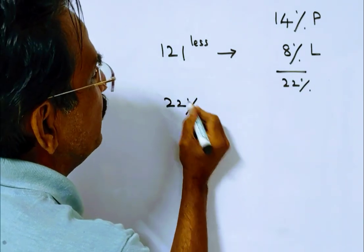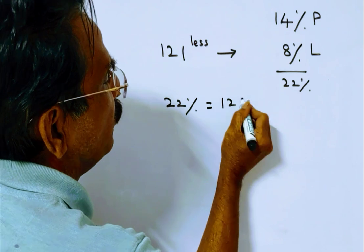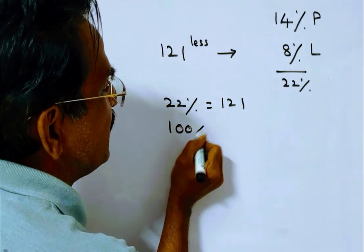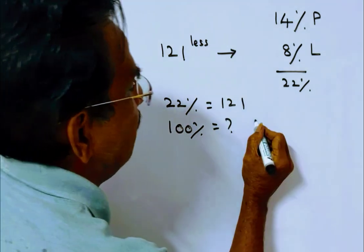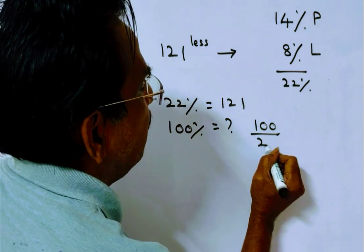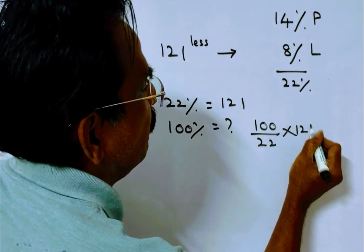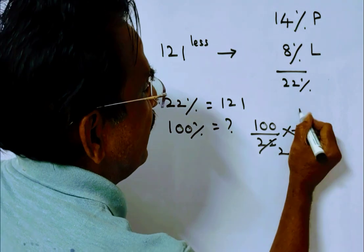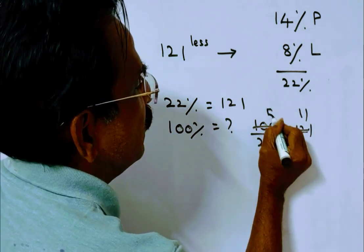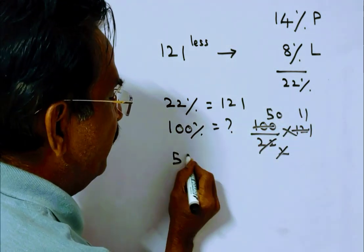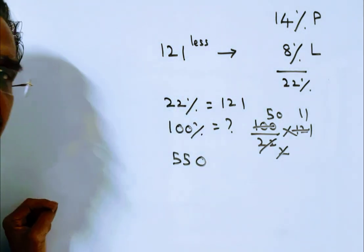So now, 22 percent is equal to 121. Then cost price, 100 percent, is equal to 100 by 22 into 121. 11 goes into 11, 11s, 250s. So 550 is the cost price.